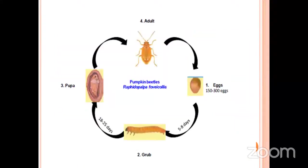This is the life cycle of the pumpkin beetle. The eggs — 150 to 300 eggs are laid in soil. After 5 to 8 days, the grub emerges. After the grub stage comes the pupa, with pupation taking place in soil. Then the adult emerges — this adult is the Aulacophora singha.